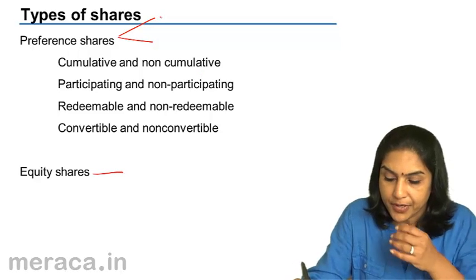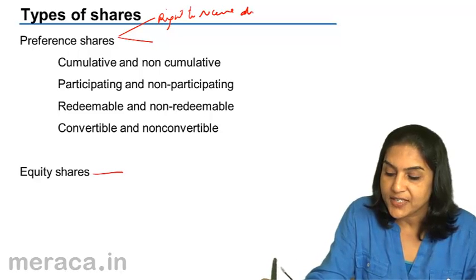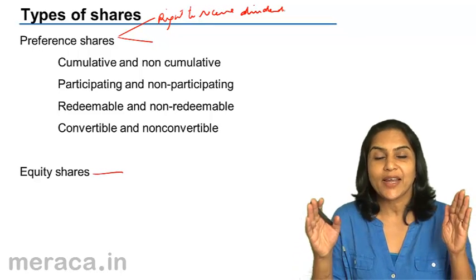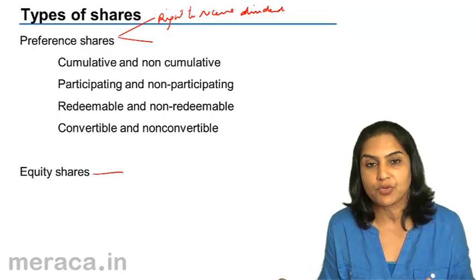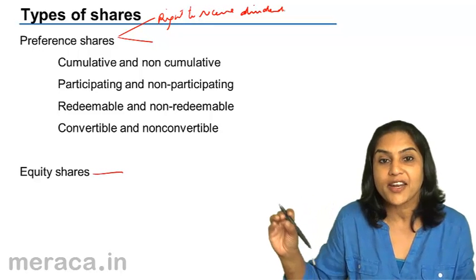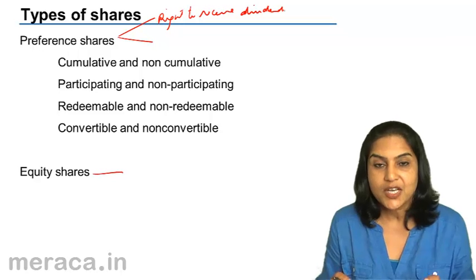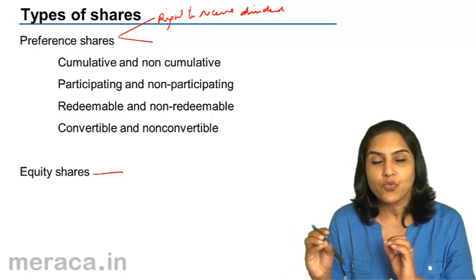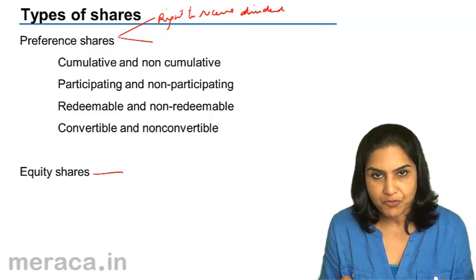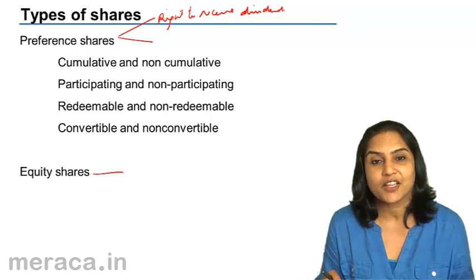One right is to receive dividend. Dividend is the share of profit given to the holders of shares. When a company makes profits, these profits are distributed to the shareholders in the form of dividend. Just like interest is the return on a fixed deposit investment, similarly if we invest in the shares of a company, the return on those shares is called dividend. When the company makes profits and if there are adequate profits, a part of the profits is distributed to the shareholders in the form of dividend.